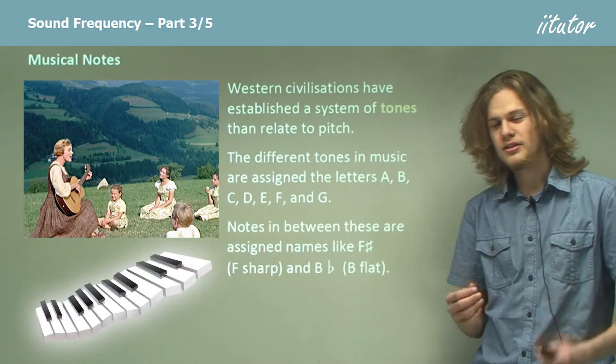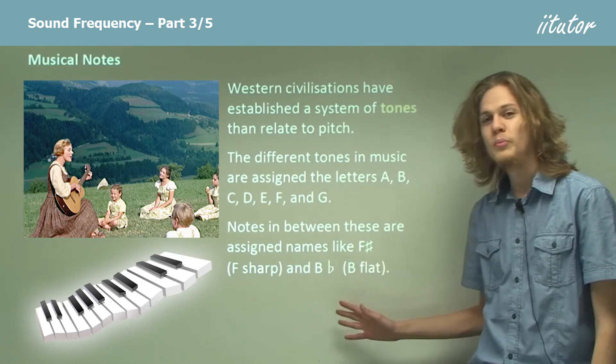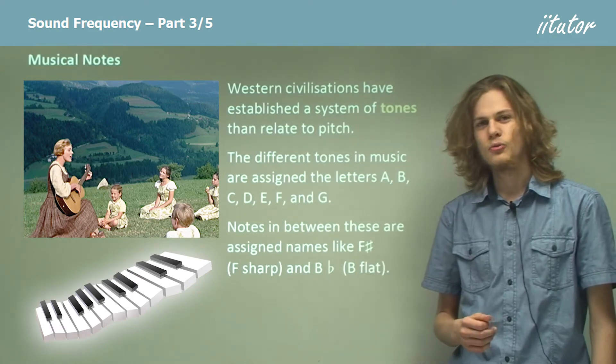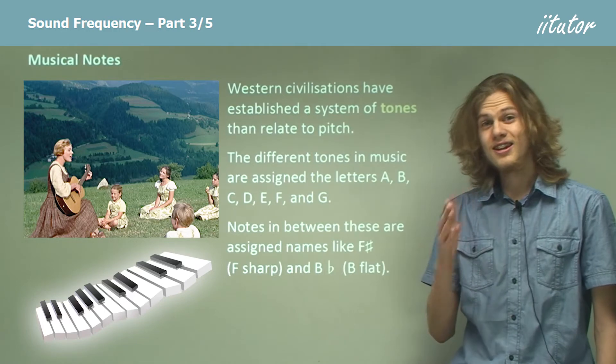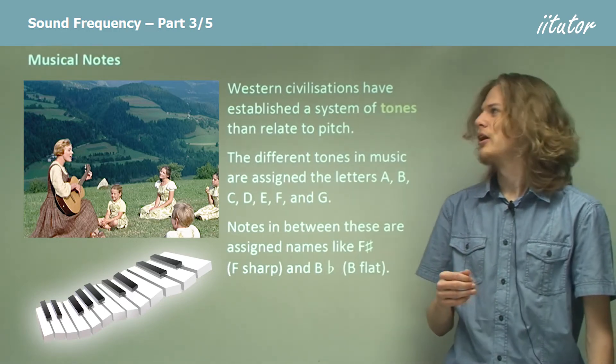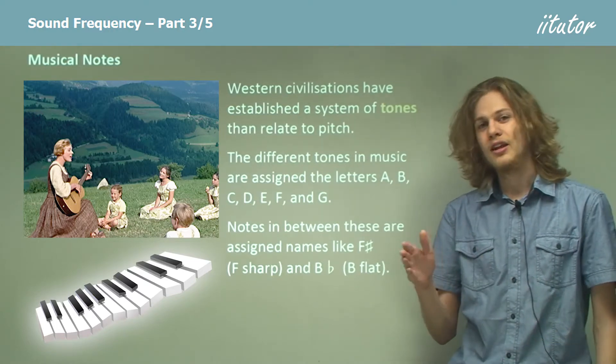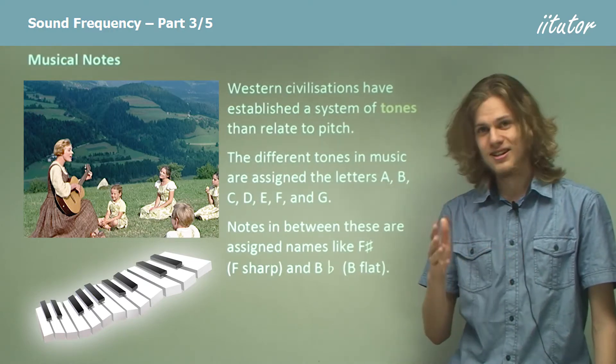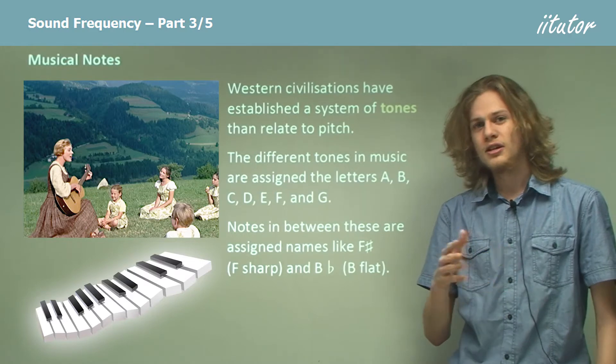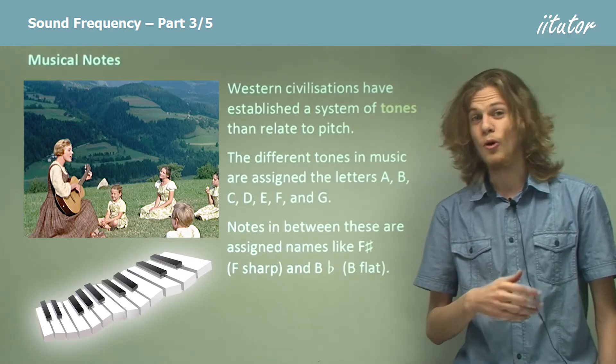So there are notes in between these that are assigned names like F sharp or B flat. So if we have C and D, wait, that might be a C and D. Then in between C and D, we'll have C sharp or D flat.